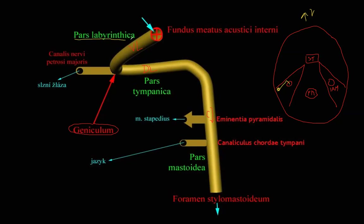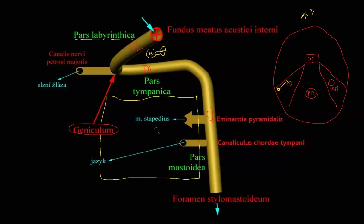The first ventrolateral part is called the labyrinthine part because it is above the labyrinth — the cochlea, vestibule, and three semicircular canals — which is the inner ear. From the geniculum, it goes above the tympanic cavity — this is the tympanic part. Then it goes down between the styloid and mastoid processes — the mastoid part — and exits at the stylomastoid foramen.